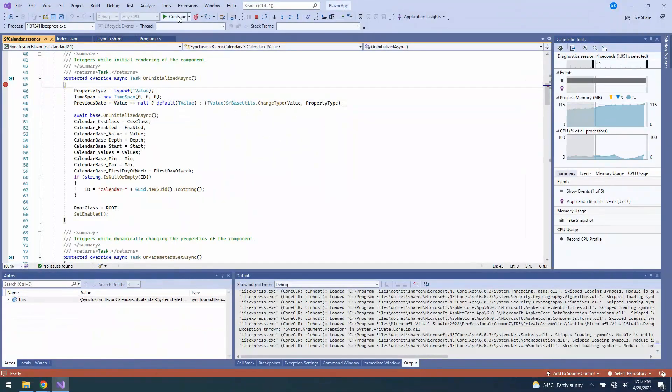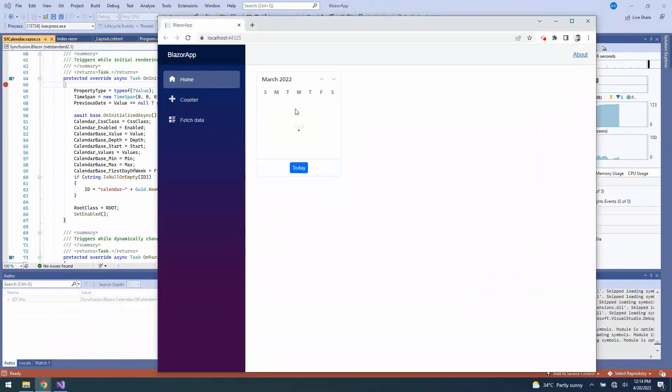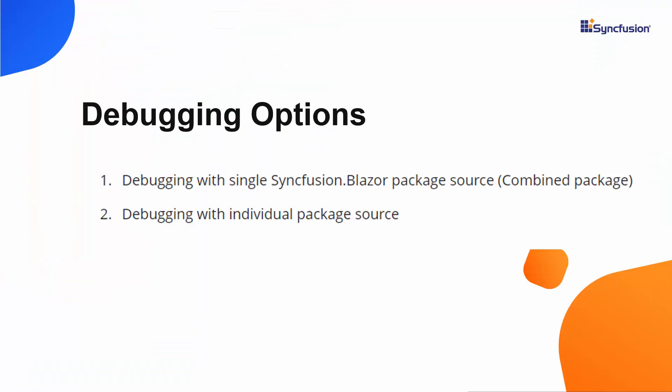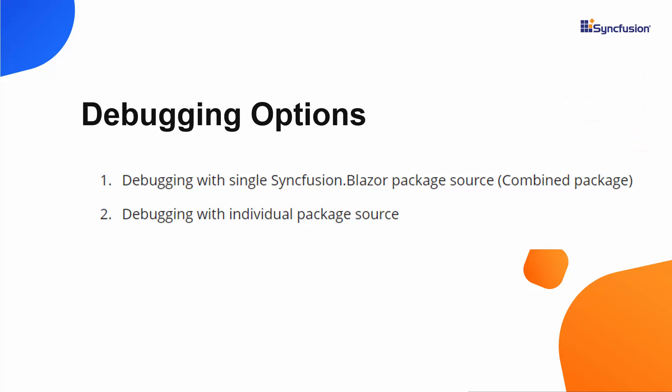Or you can also click the Resume Execution button to render the calendar component. Now I will move on to the Syncfusion Blazor individual package source, which contains only the specified source in that package name to reduce the application deployment size in production. If you want to know more about the benefits of the individual package source, you can refer to the UG page link shown in the above YouTube card. Now I will move on to show you how to debug the individual source package.